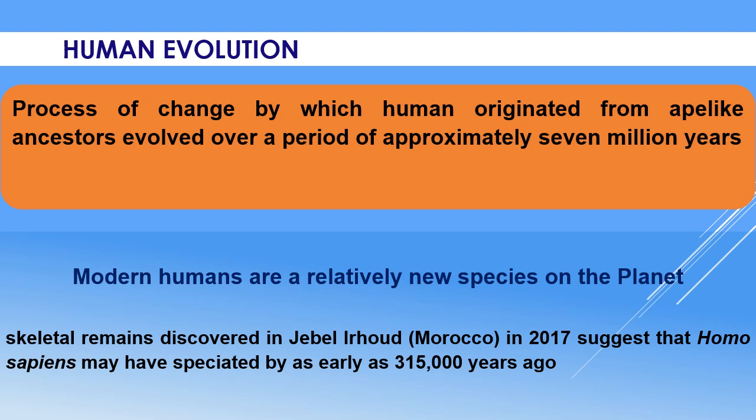Earlier it was thought that Homo sapiens may have speciated about 200,000 years ago. However, recent discoveries suggest that Homo sapiens may have speciated as early as 315,000 years ago.